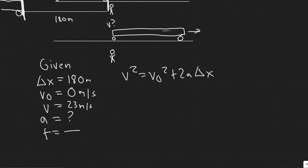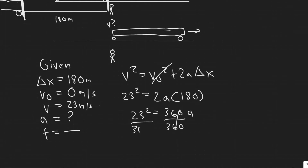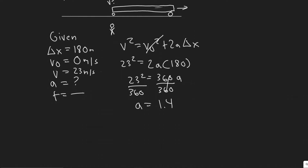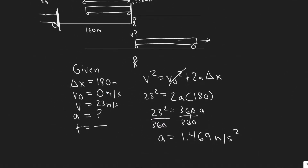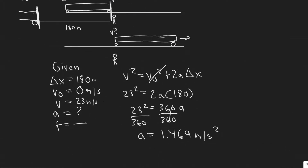It's just a matter of plugging in and solving. V is 23, so 23 squared equals v₀ squared which is 0 squared — that term goes away — plus 2 times a times 180. Two times 180 is 360. So I divide 23 squared by 360 and get acceleration equals 1.469 meters per second squared. So the acceleration of this train is 1.469 m/s² throughout the entire interval.